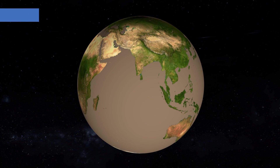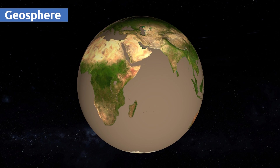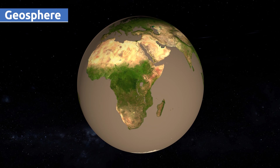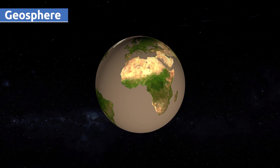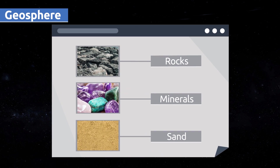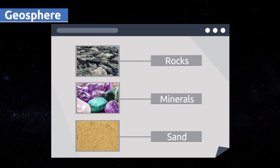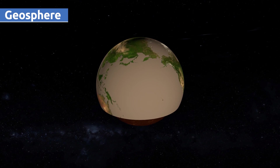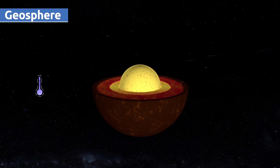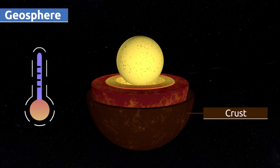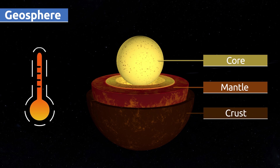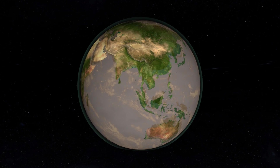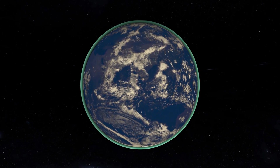The inner layer of the Earth is the geosphere, which extends from the surface to the center of the Earth. This solid, habitable layer is made up of rocks, minerals, sand, and other materials. The geosphere is divided into three different layers: the crust, the mantle, and the core. Temperature rises significantly as we move deeper.